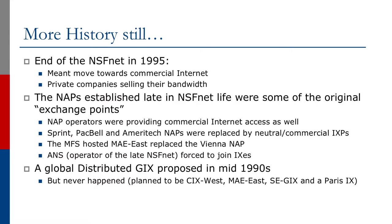The end of the NSFnet in 1995 meant the move towards a full commercial Internet. Private companies were selling bandwidth in North America, Europe, and parts of Asia. The network access points established late in the NSFnet's life were some of these original exchange points. The issue was that the NAP operators were providing commercial Internet access as well, and so the Sprint, PacBell, and Ameritech NAPs disappeared and were replaced by neutral or commercial Internet exchange points. The MFS-hosted MAE East replaced the Vienna NAP in more or less the same location. ANS, who won the contract to operate the late NSFnet, were forced to join these exchange points as well.